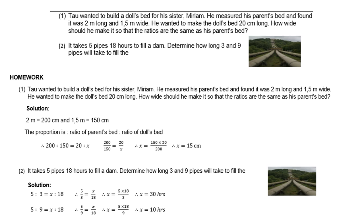Tau wanted to build a doll's bed for his sister, Miriam. He measured his parents' bed and found it was 2 meters long and 1.5 meters wide. He wanted to make the doll's bed 20 centimeters long. How wide should he make it so that the ratios are the same as his parents' bed?